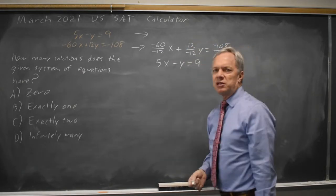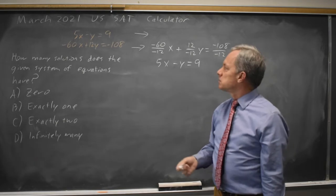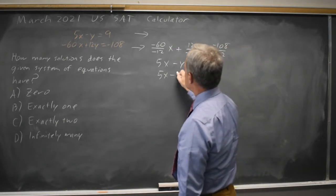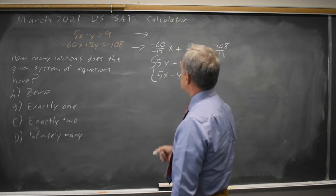They're the same equation. Since these are both the same equation, our system is 5x minus y equals 9 and 5x minus y equals 9.